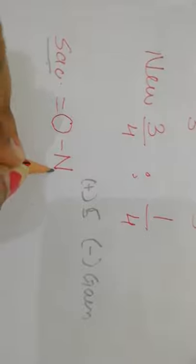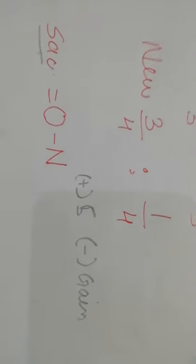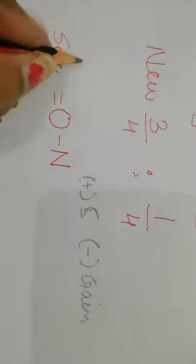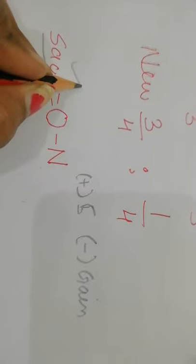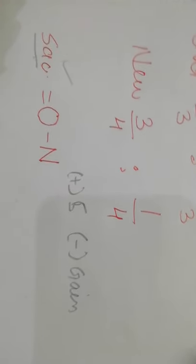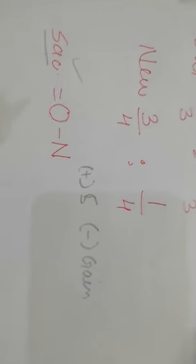So if a positive answer comes, it will be a sacrificing ratio. And if the answer is negative, then it will be the opposite — which will be a gain.